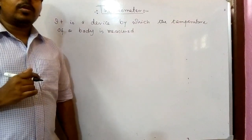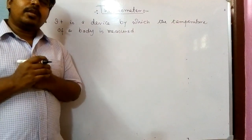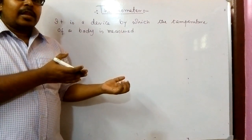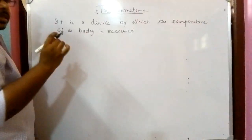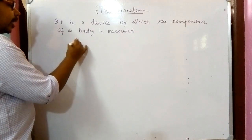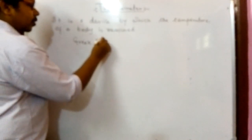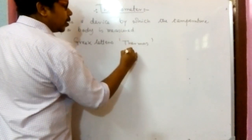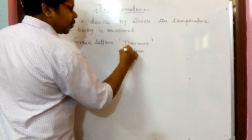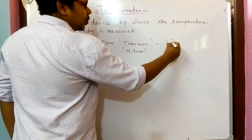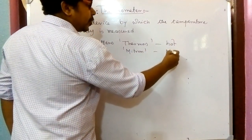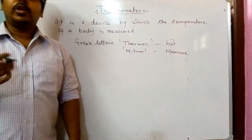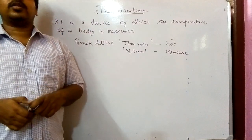The question comes to our mind — why is the name 'thermometer'? The reason is that this name comes from two Greek letters: the first one is 'thermos' and the second one is 'metron'. Thermos means hot and metron means measure. So with the help of a thermometer we can measure the hotness or coldness of a body, and that's why we use a thermometer to measure temperature.